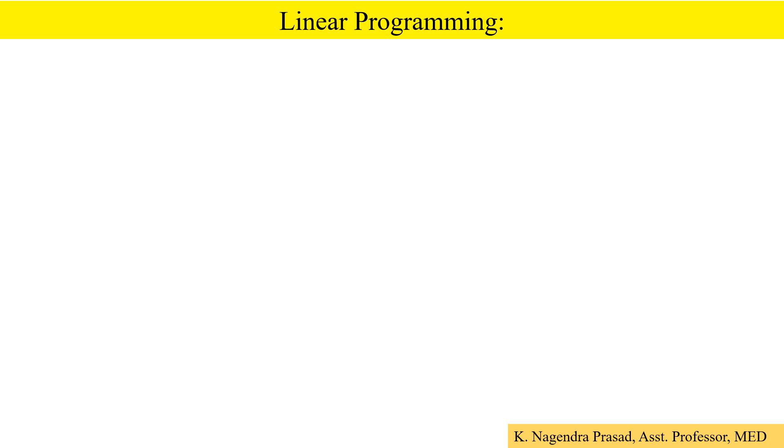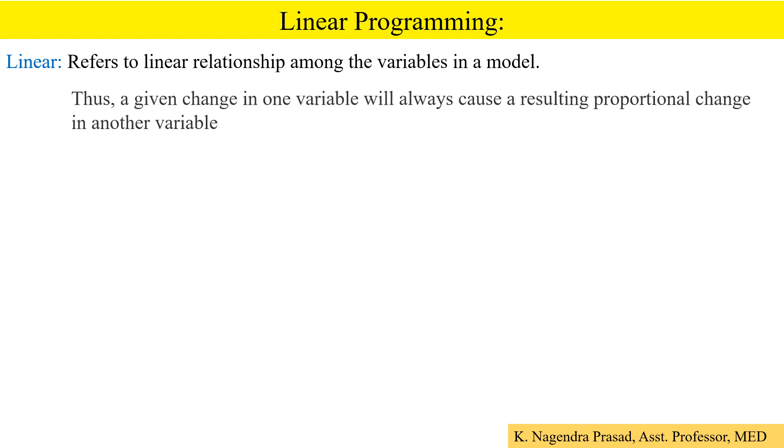First we will see the basic words regarding linear and programming. Linear refers to linear relationship among the variables in a model. Thus, a given change in one variable will always cause a resulting proportional change in another variable.